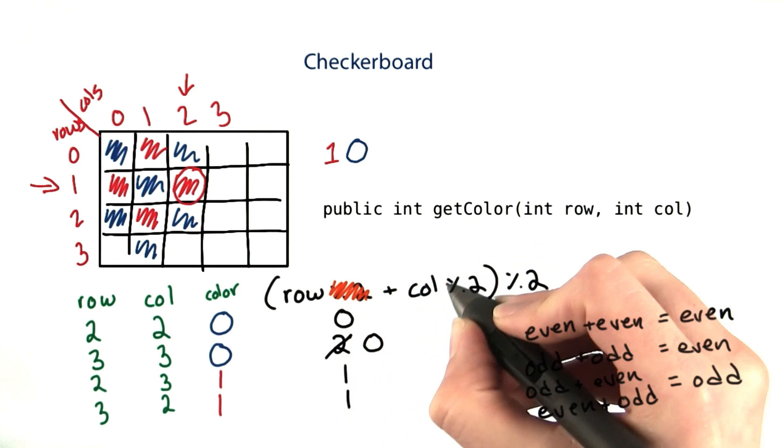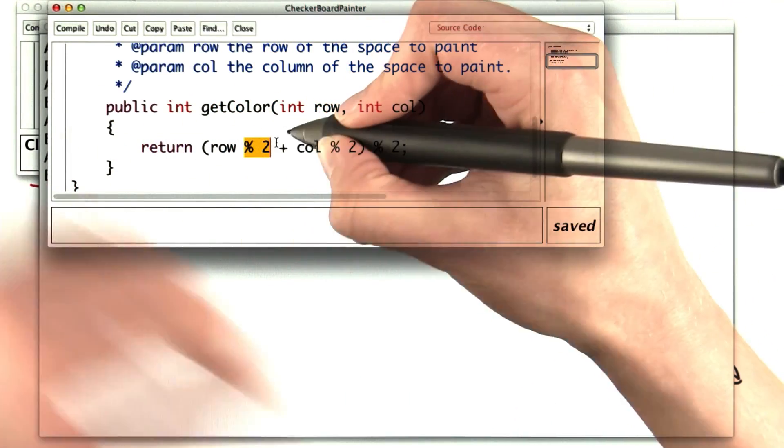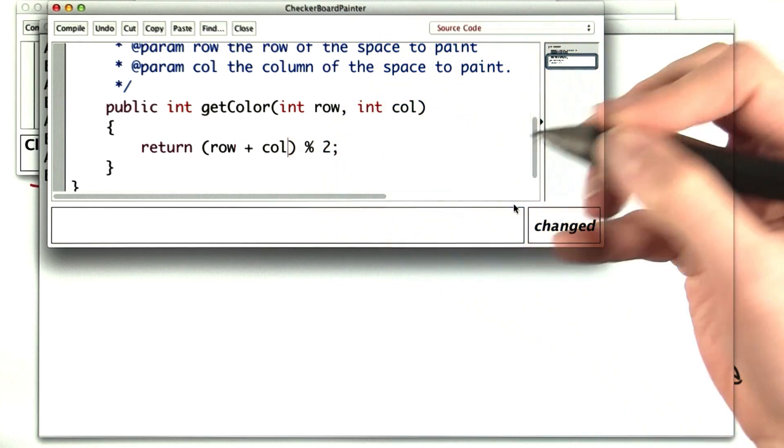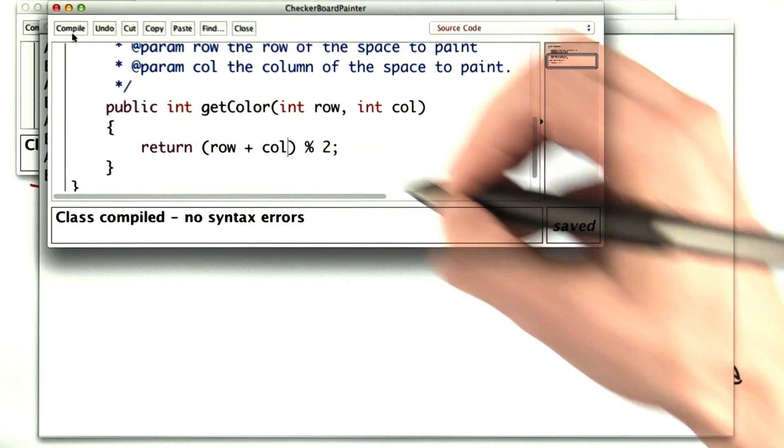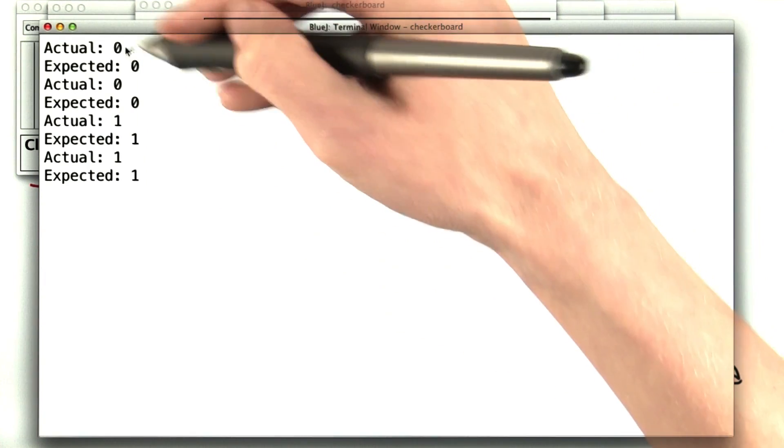So I'll just get rid of the mod 2 and the mod 2. If I change it in the checkerboard painter, erase that, and erase that, what will my test say? Is this still the same? And if I run the test again, it still works.